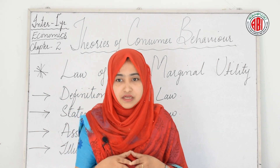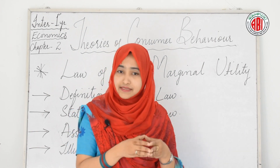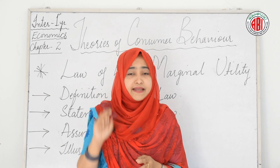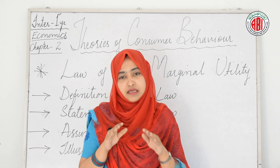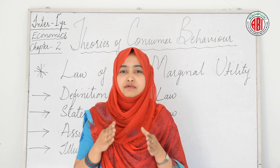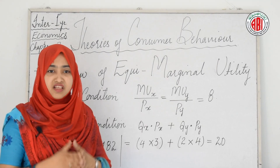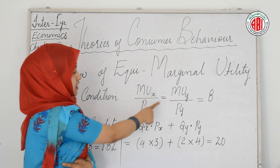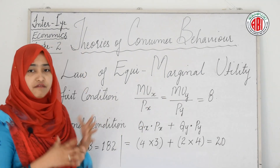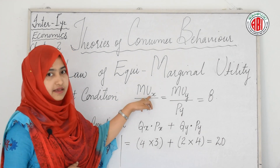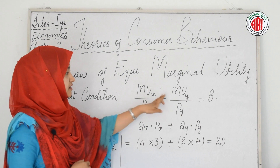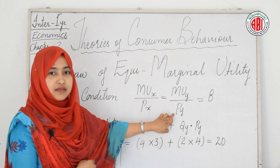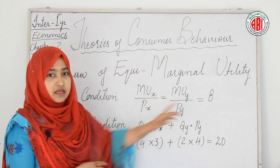The equilibrium conditions are: first, the ratio of marginal utility to price of good X must equal the ratio of marginal utility to price of good Y. That is, MUX/PX = MUY/PY = 8. Here MUX is the marginal utility of good X, PX is its price, MUY is the marginal utility of good Y, and PY is its price.